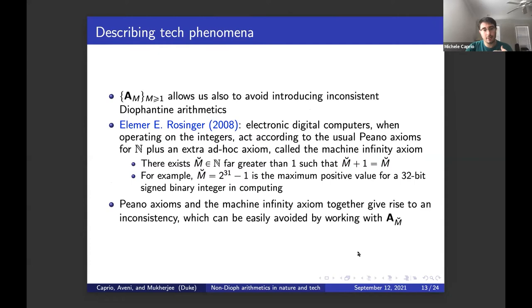We can also describe tech phenomena that our class allows to describe in a very interesting manner. For example, Professor Rosinger in 2008 pointed out that electronic digital computers when operating on the integers act according to the usual Peano axioms for the naturals, plus an extra ad hoc axiom called the machine infinity axiom that says that there exists a natural number that I call here M breve, far greater than one for which M breve plus one is equal to M breve. For example, M breve equal to 2 to the power 31 minus one is the maximum positive value for a 32-bit signed binary integer in computing.